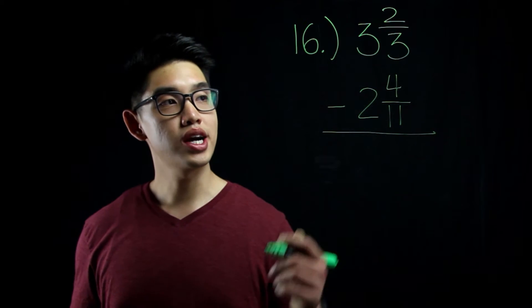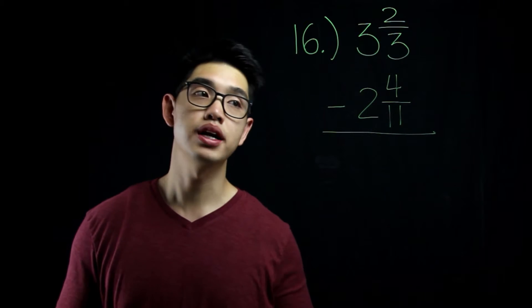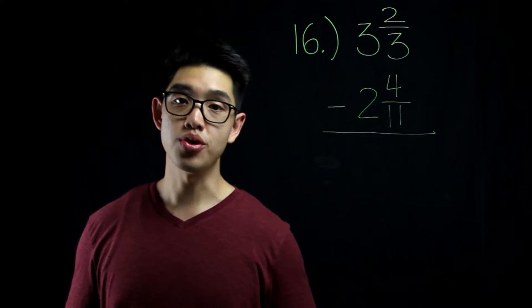Number 16 is another subtraction problem. Before I subtract these two fractions, I'm going to find the least common denominator of 3 and 11, which is 33.